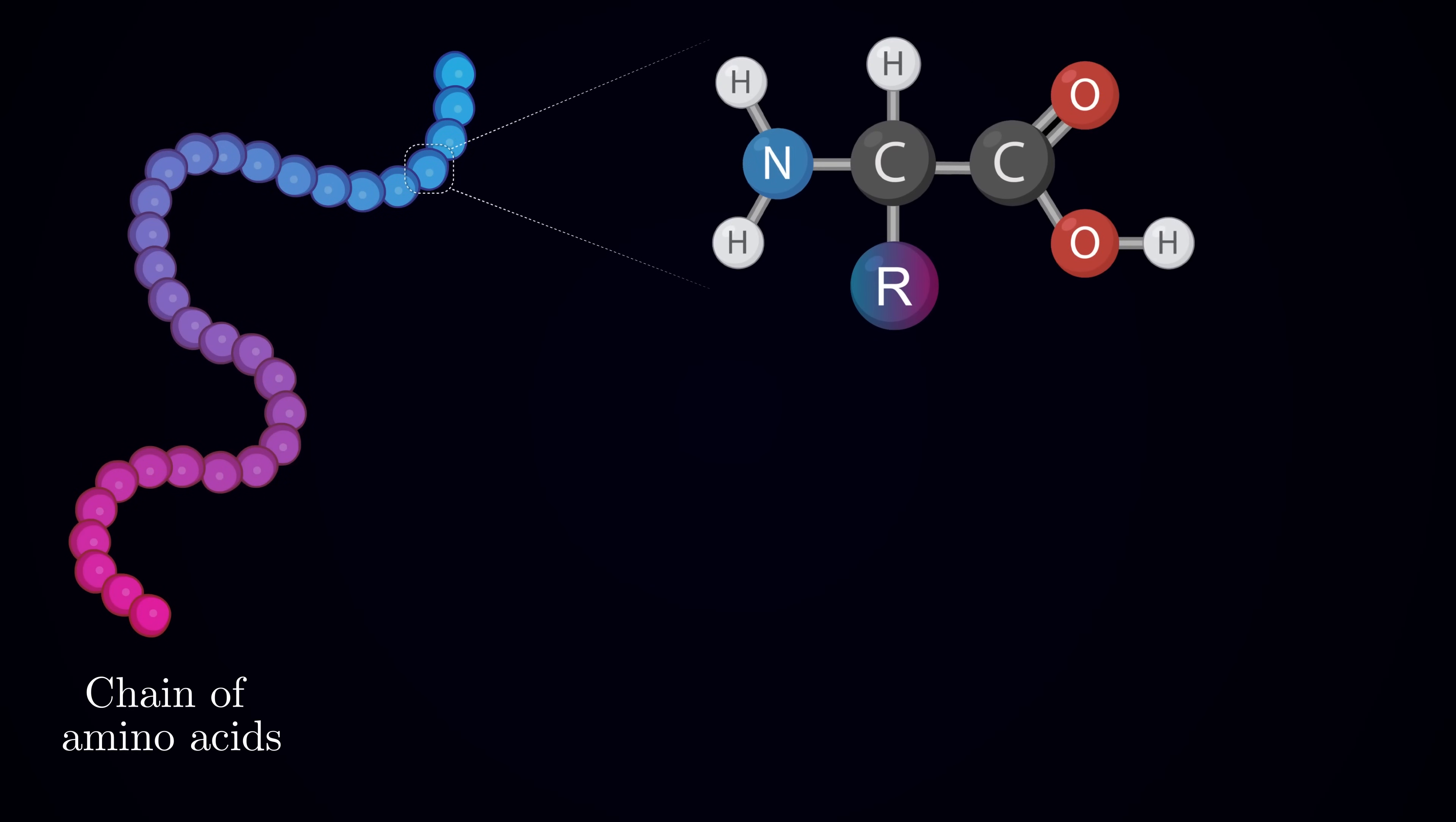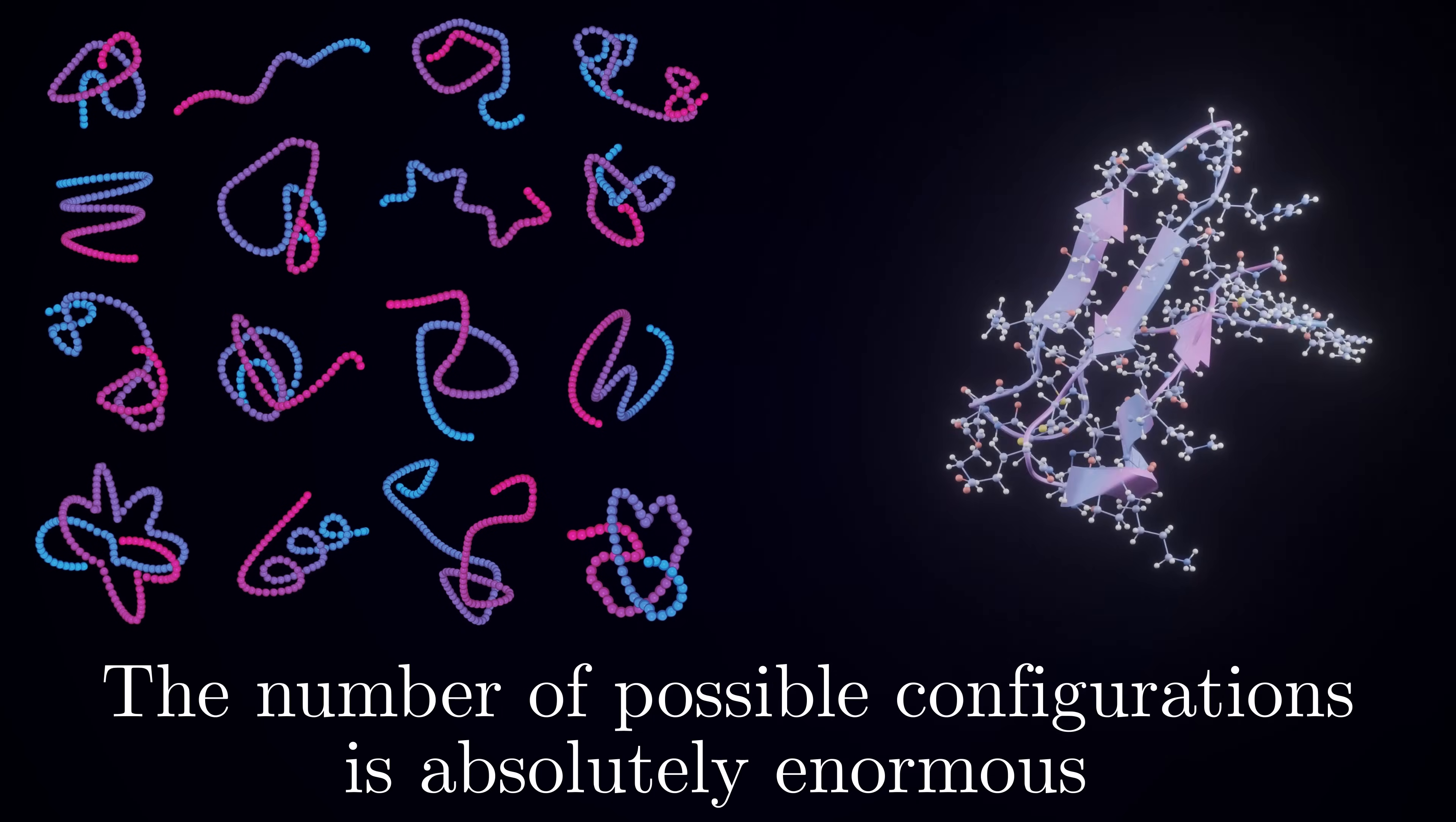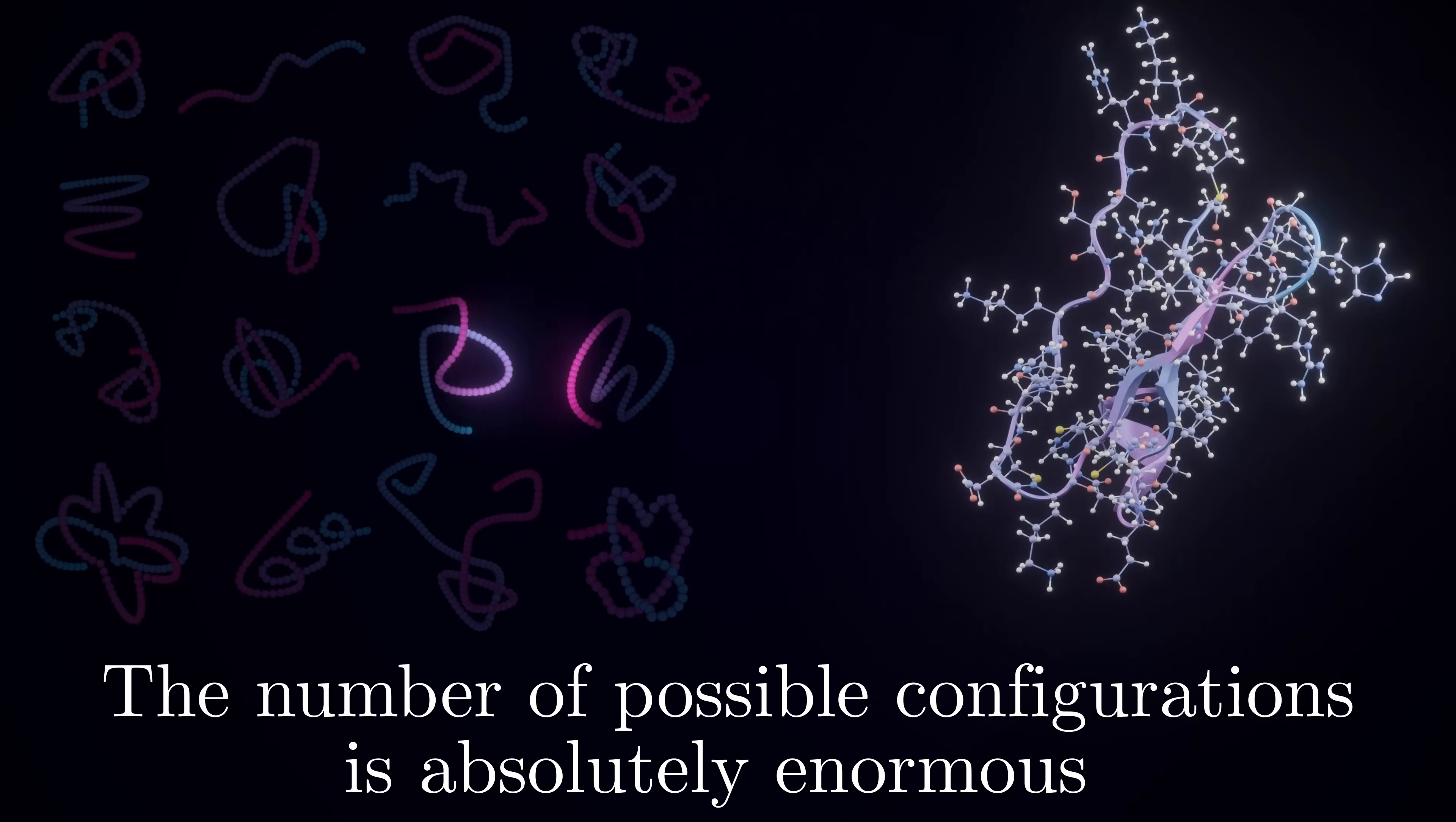As you may know, proteins are long chains of amino acids that fold into specific three-dimensional structures which determine their function. The number of possible structural configurations a protein can take, considering all the different ways you can arrange the atoms of an amino acid chain in three-dimensional space, is absolutely enormous. It seems like it would take an astronomical amount of time for a protein to search through all possible structures to find its correct folded state.